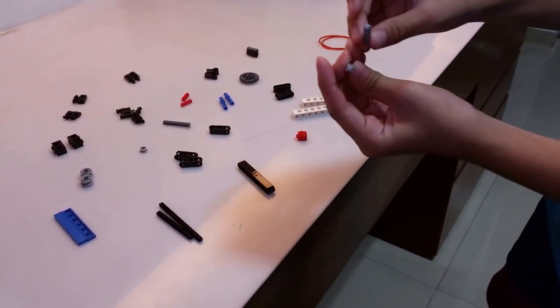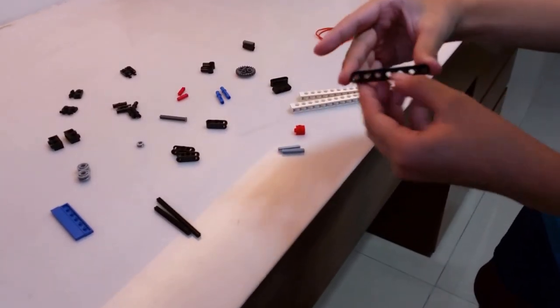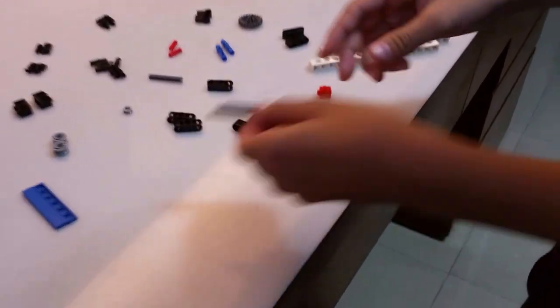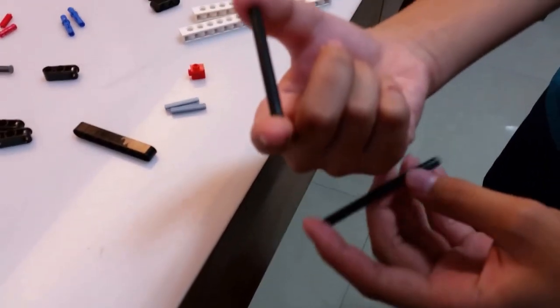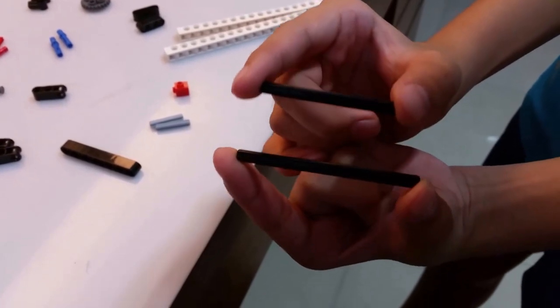You'll need these cross sticks about 3 cm long or about 1 cm long, and this one with seven holes. You also need these sticks - they can be black or gray, but around this length.